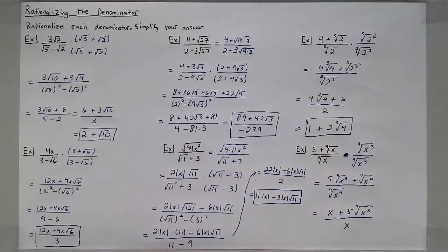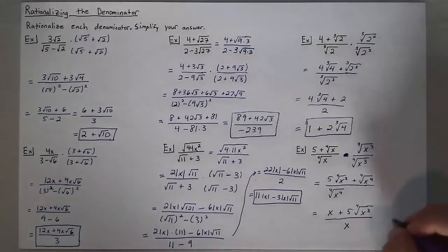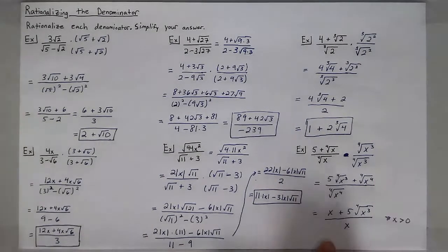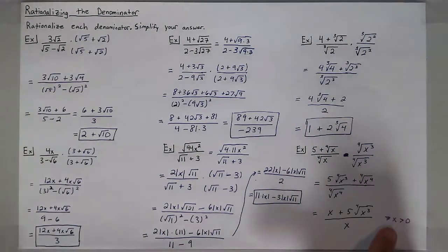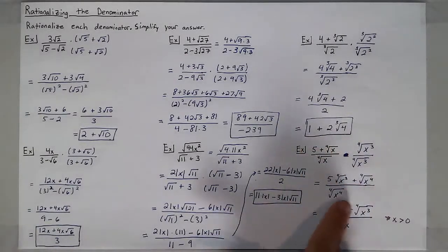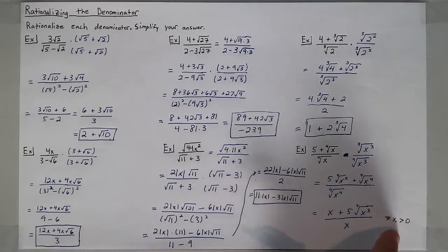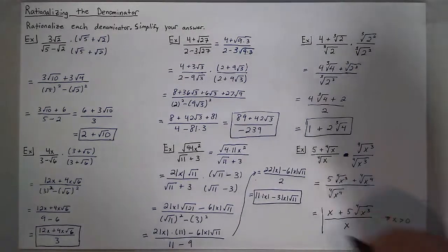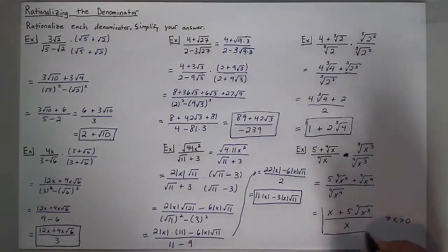I'll write that x has to be greater than 0. So if I'm assuming that based on the original expression, I don't need to put absolute value bars, since x is already assumed to be positive. I'll include that condition in my final answer as well.